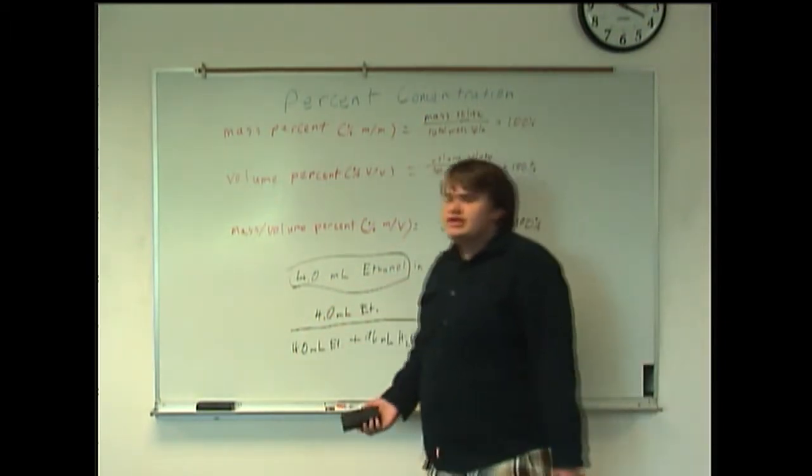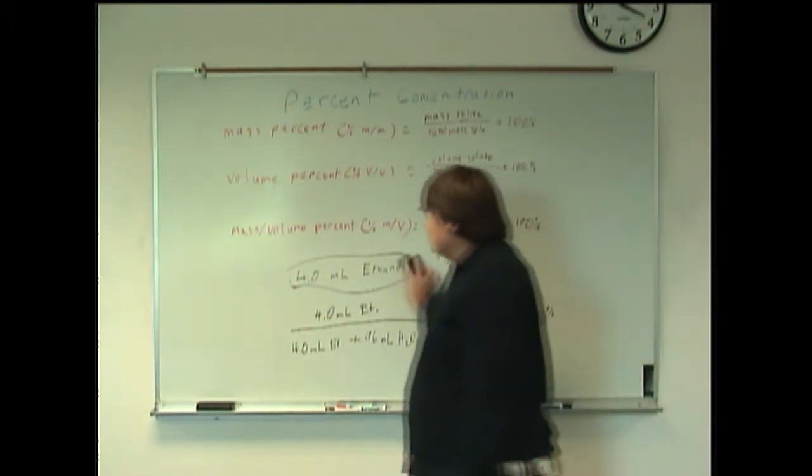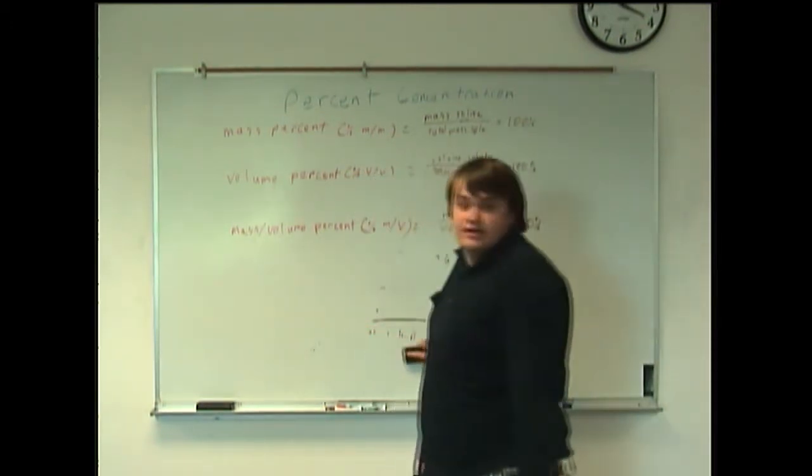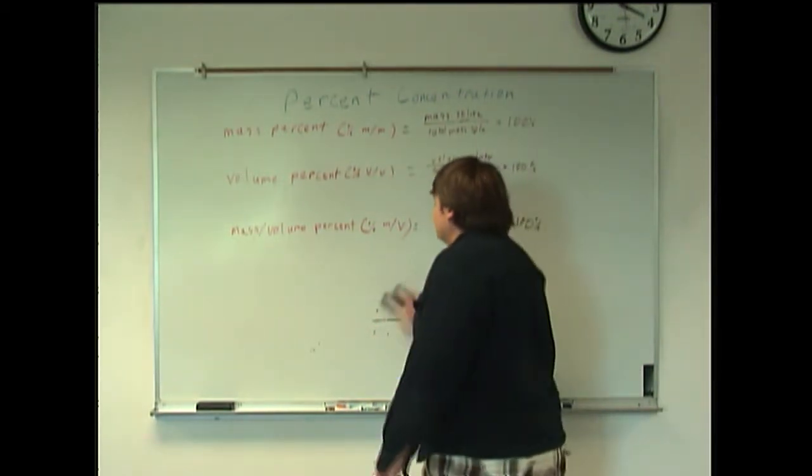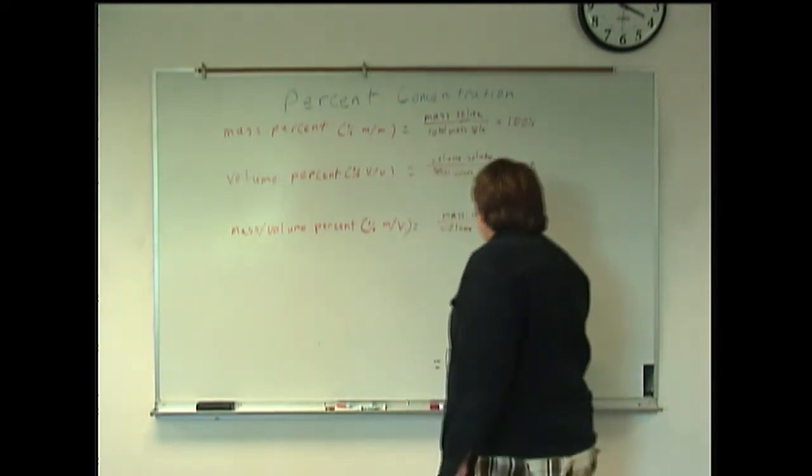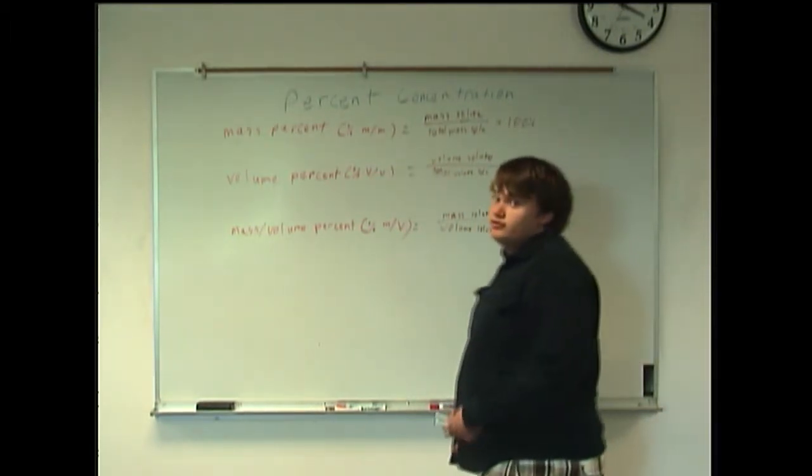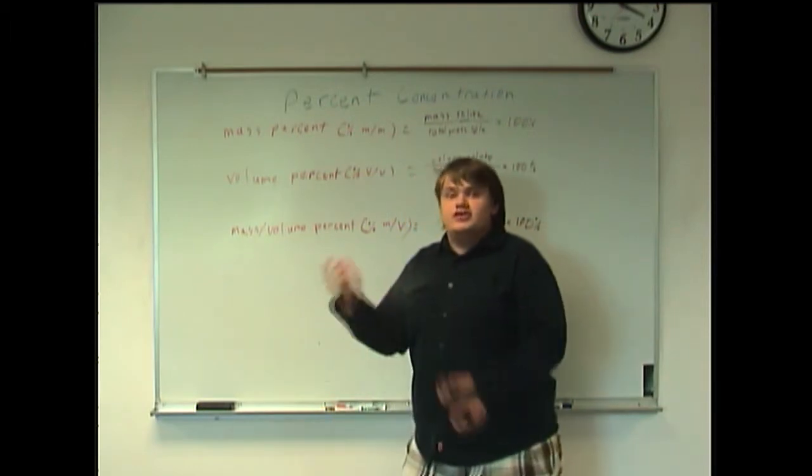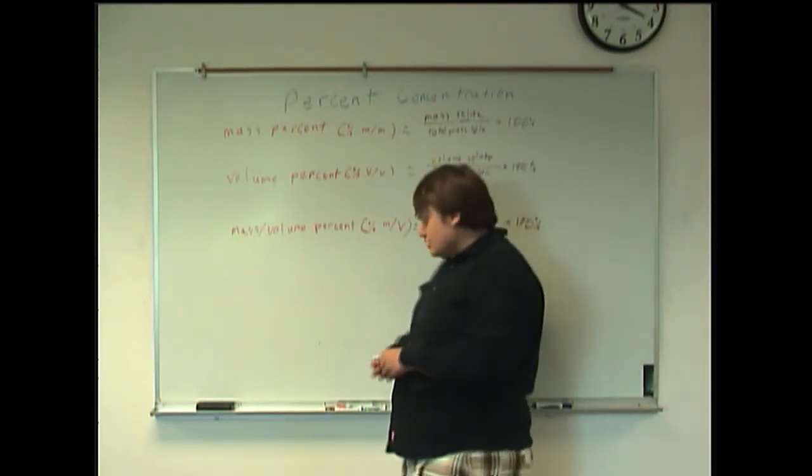This one's slightly easier because you don't have to add anything up in the bottom. That's going to be the mass of your solute divided by the volume of your solvent. And the reason we can get away with it is because, more often than not, when you add the solute to the solvent, it doesn't really change the volume all that much, so the volume is assumed to be the same.